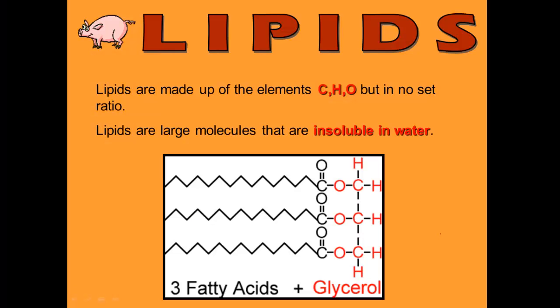Hi everyone and welcome to our screencast on lipids. Today we're going to be talking about fats. Lipids are fats and lipids are made up of three elements — the same three elements that carbohydrates are made of: carbon, hydrogen, and oxygen.